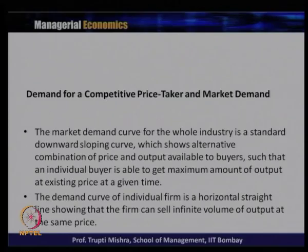The demand curve for the individual firm under perfect competition is a horizontal straight line, showing that the firm can sell any volume of output at the same price. This is because the individual firm is a price taker — not a single buyer or seller can influence the price. Whatever amount the firm wants to sell, they can sell it at the same market price.